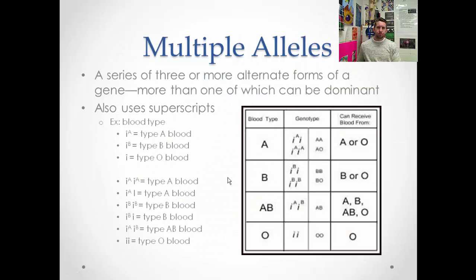Multiple alleles — blood type is a great example. This refers to a series of three or more alternate forms of a gene, more than one of which can be dominant. In blood type, we have three possible alleles, and we use superscripts again. The possible alleles are I superscript A, I superscript B, and little i. This is also related to co-dominance, because I^A and I^B are both dominant, while little i is recessive.